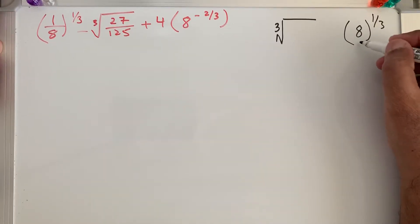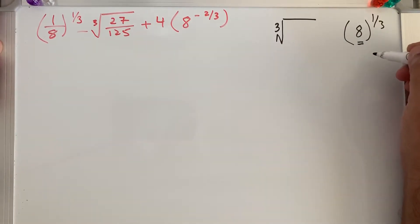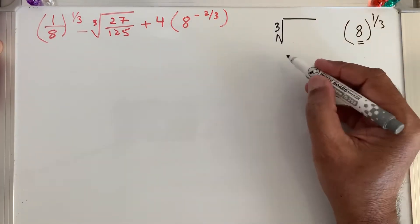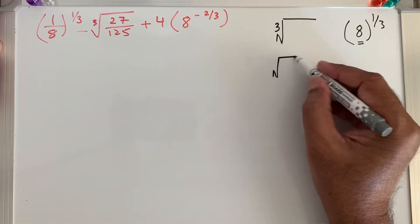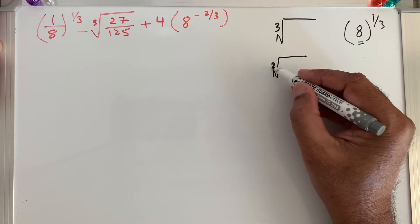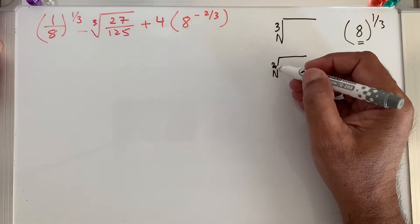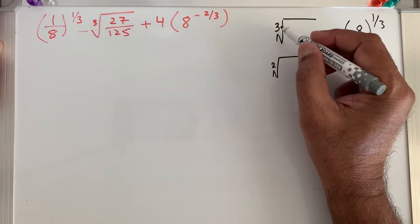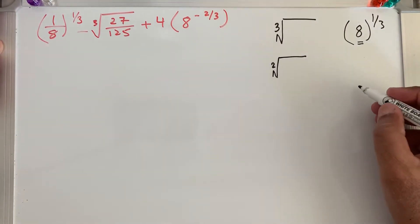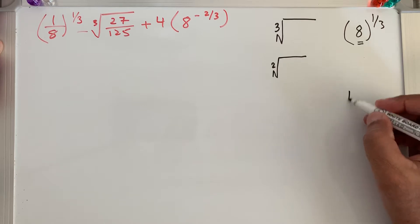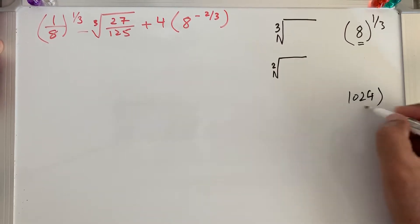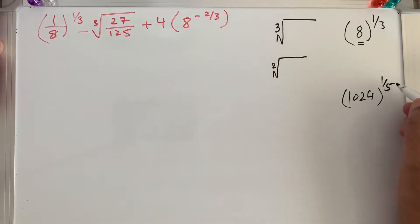We learned before that the square root uses the radical sign with an implied 2 — we take it for granted that it is a square root. But if we are not taking a square root, we must mention the number. For example, if we want to take 1024 to the power 1 over 5, we write a 5 on the radical sign.